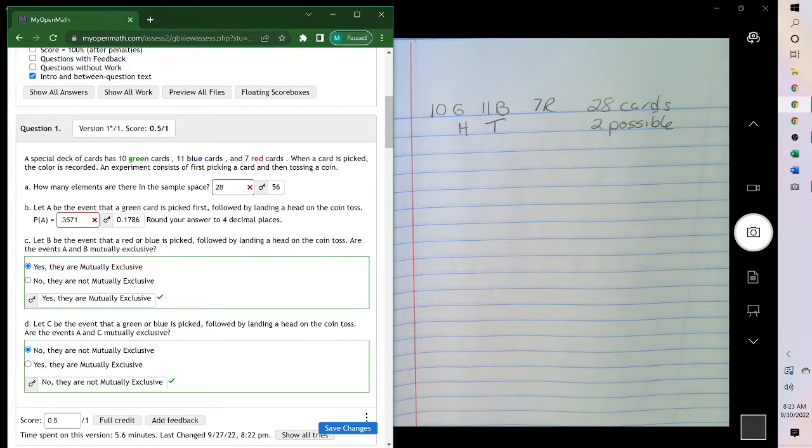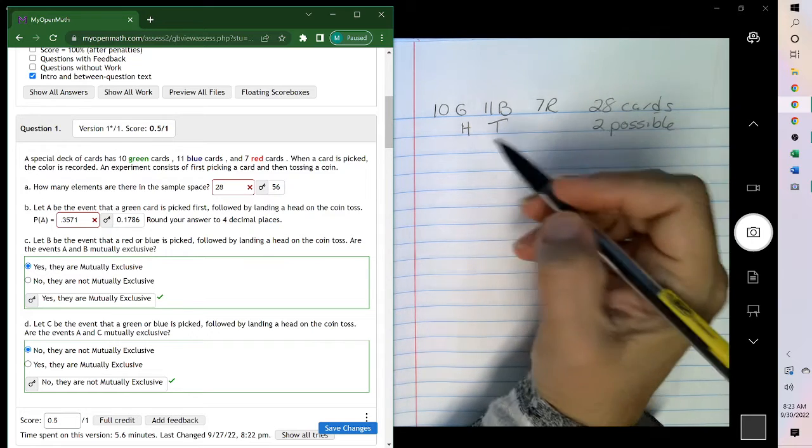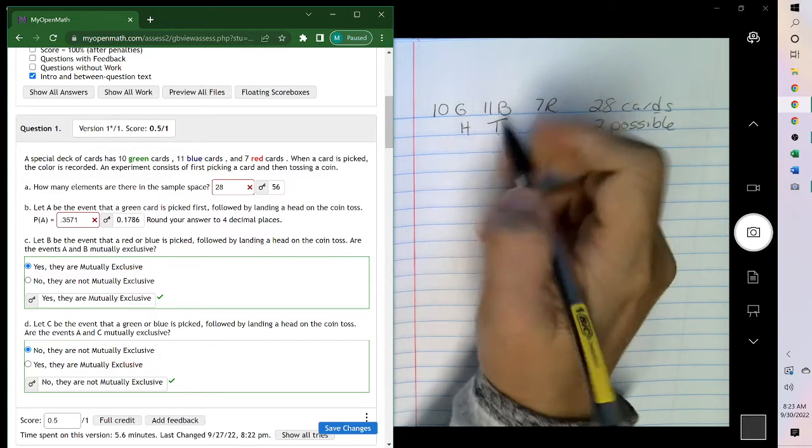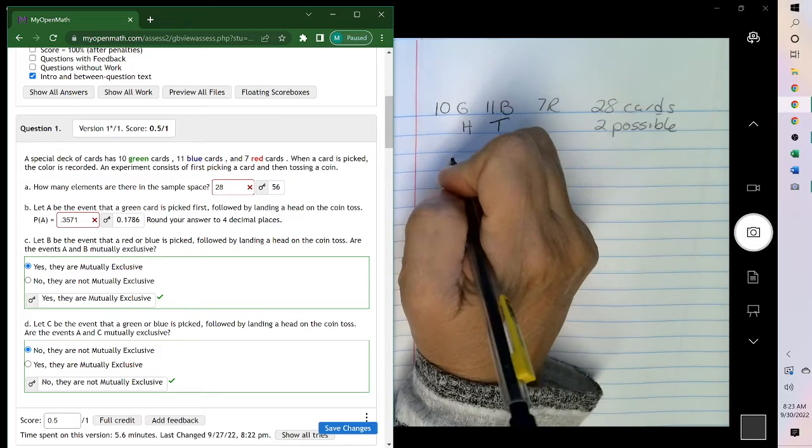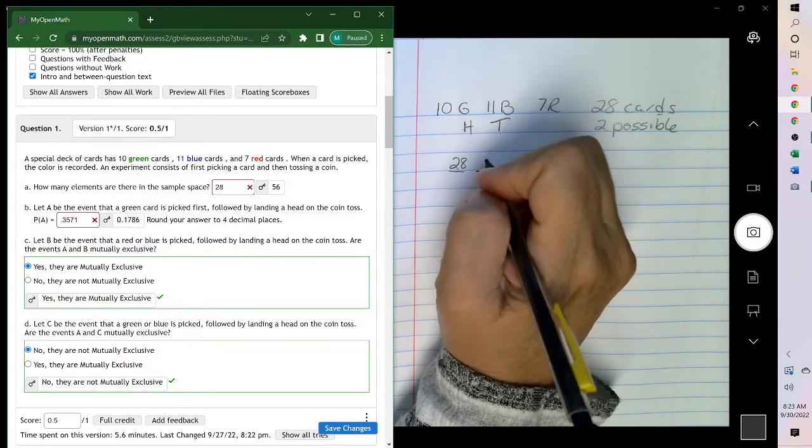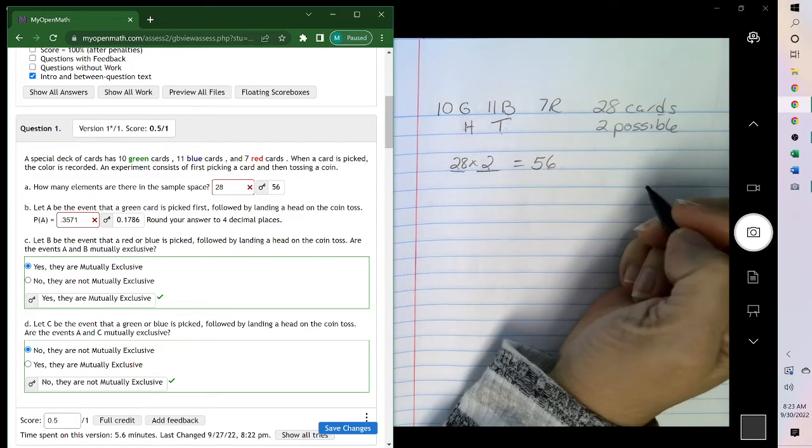How many elements are there in the sample? Well, there's 28 cards, but those 28 cards will each be marked with a head and then a tail. So to find the total outcomes, pulling the card is 28 possibilities. Tossing a coin has 2. When you multiply them together, you get 56.